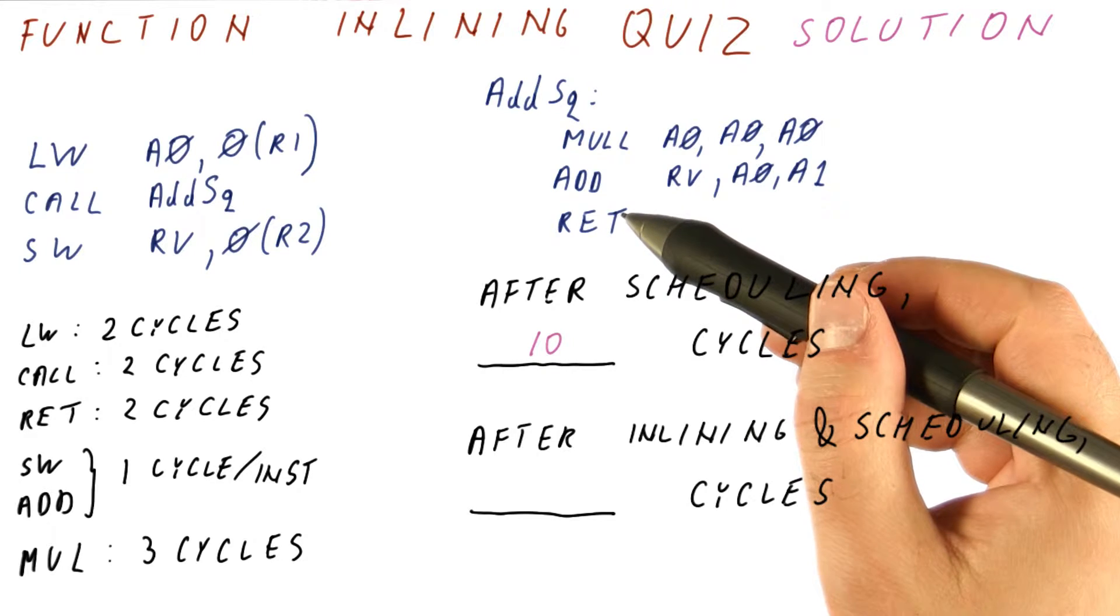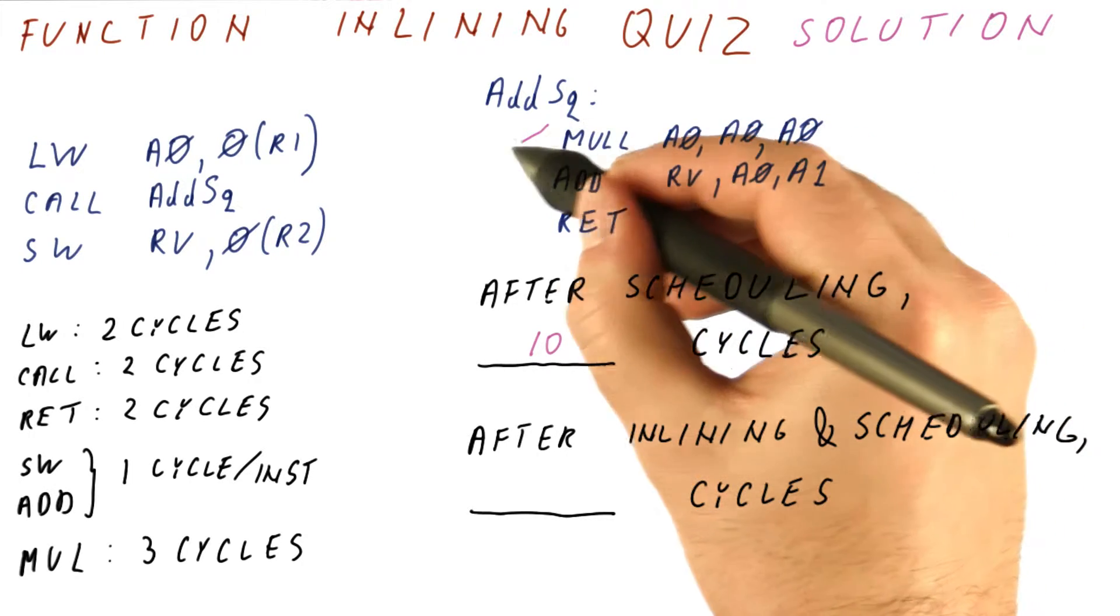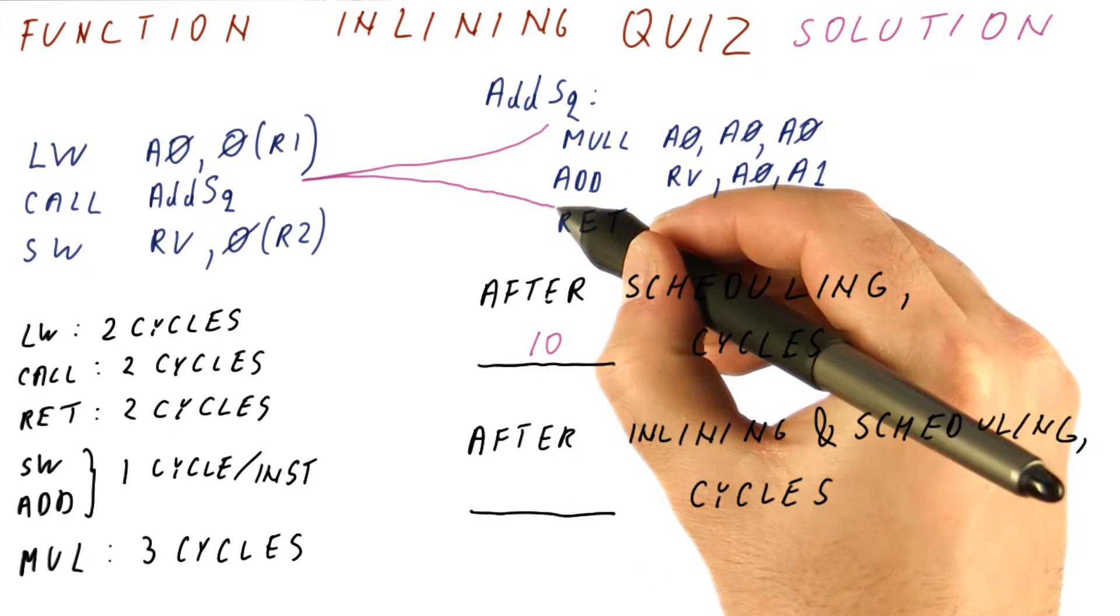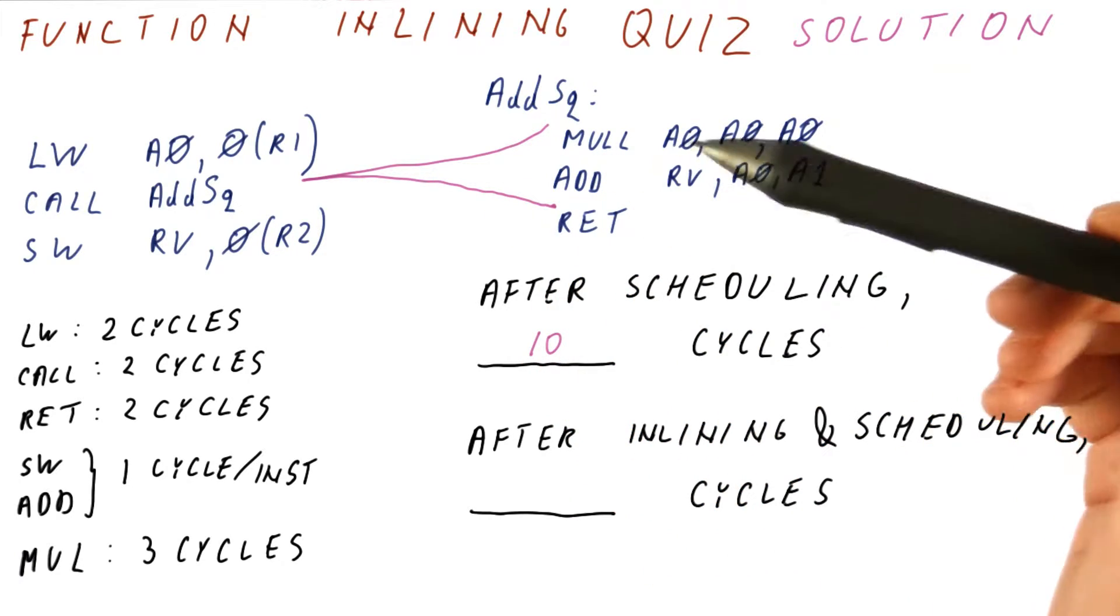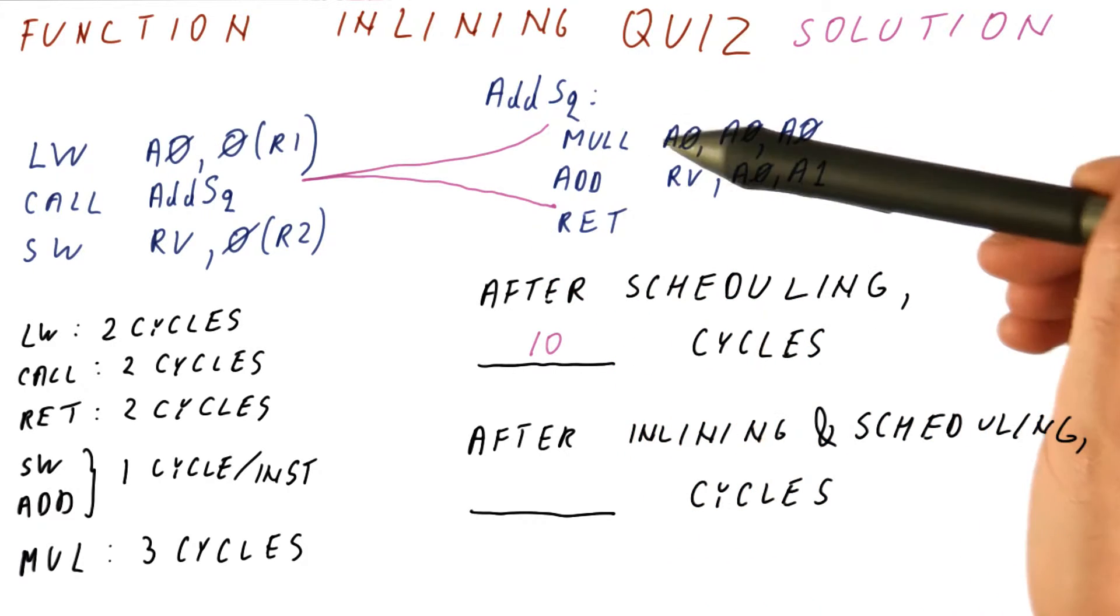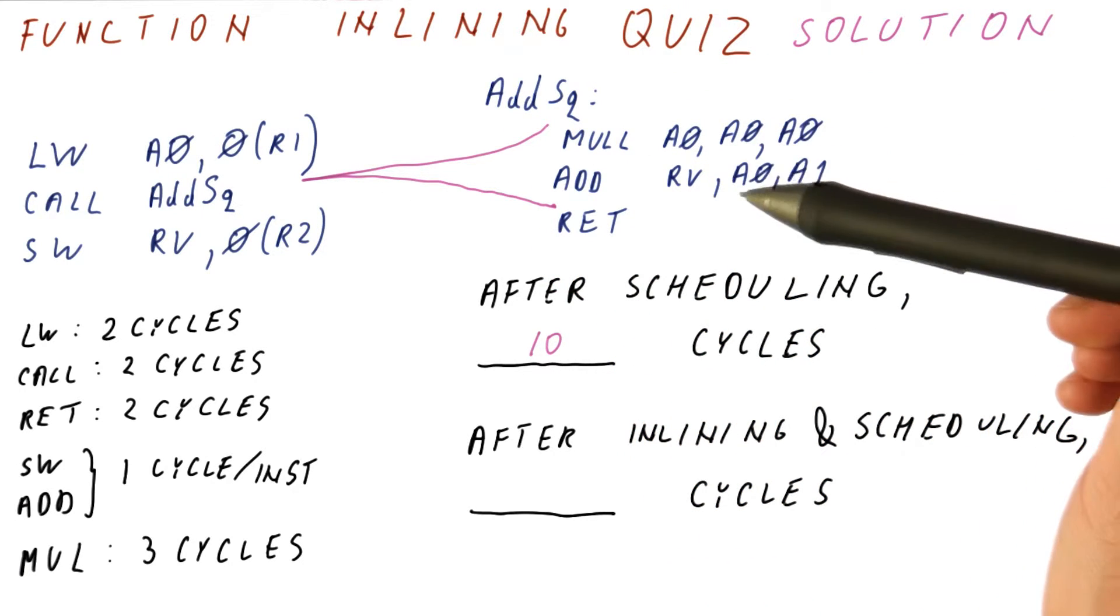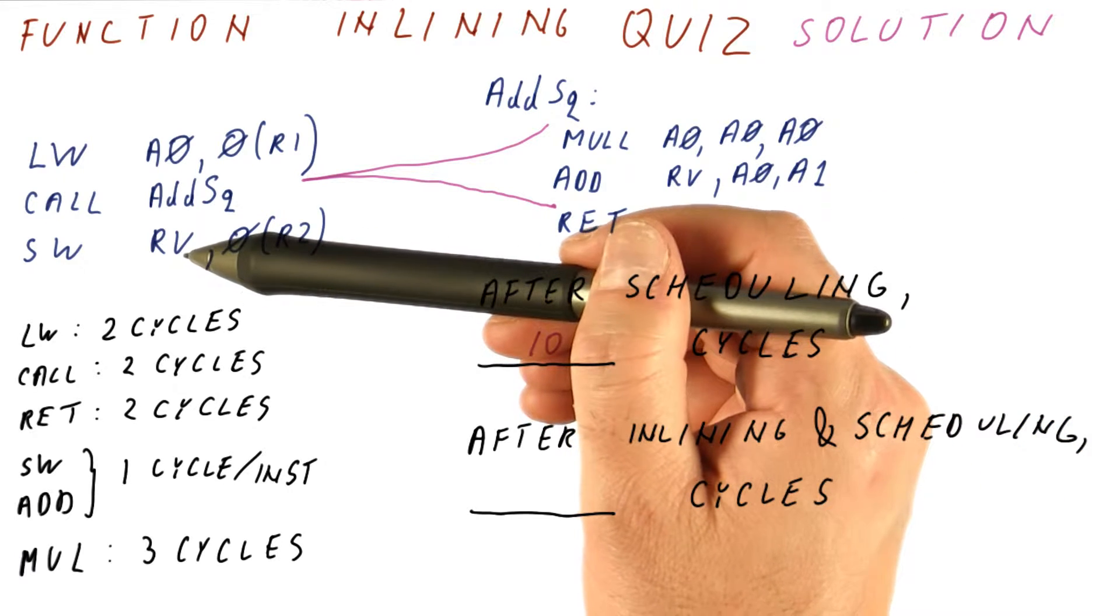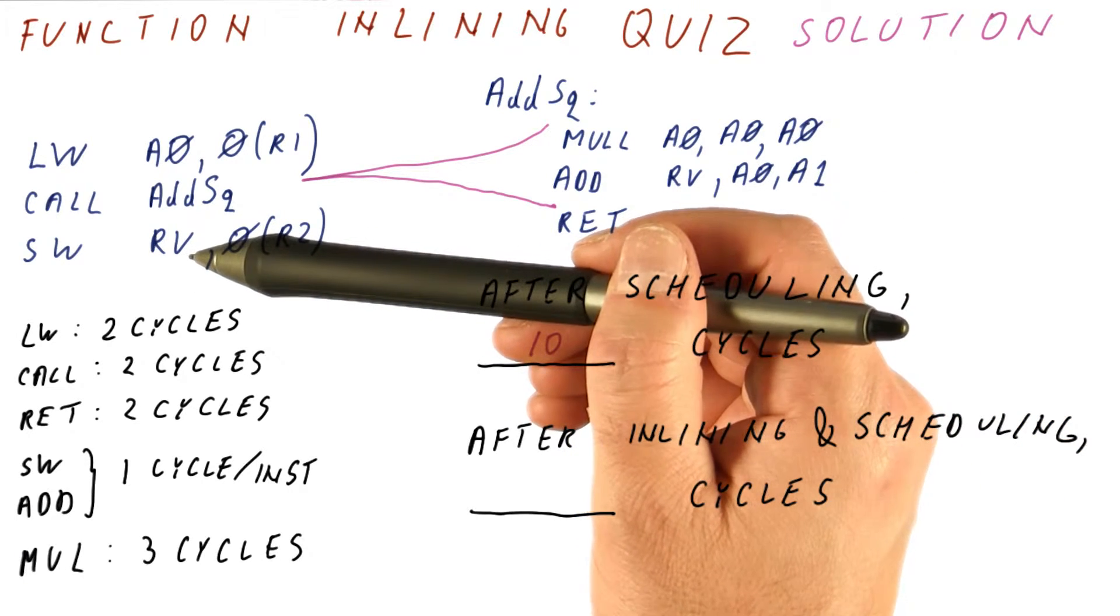Now let us see what the inlining will do. What it will do is it will simply take these two instructions and replace the call with them. Now let's see, can we do some scheduling around it? We need to load a zero. Then we're going to use it in multiplication. Then we're going to use it in the addition. And then we're going to use the result of it in the store. So again, scheduling is not going to help us here.